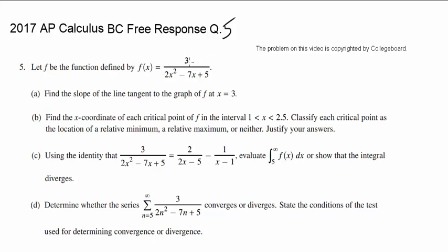Let's look at question number 5 for the 2017 AP Calculus BC free response. Let f be a function defined by f(x) equals 3 over 2x squared minus 7x plus 5. Find the slope of the tangent line to the graph at x equals 3.